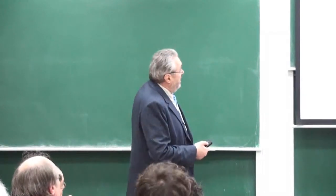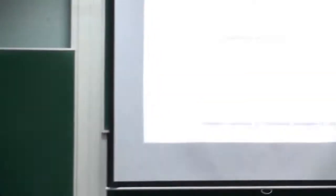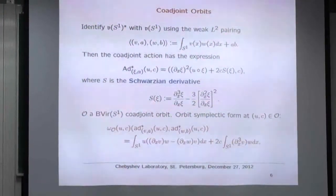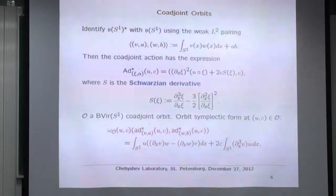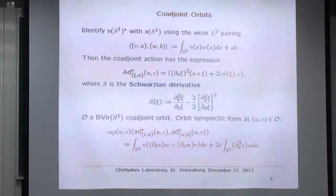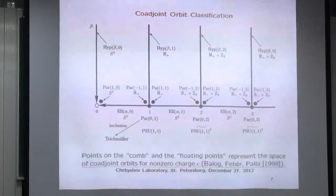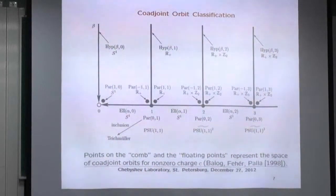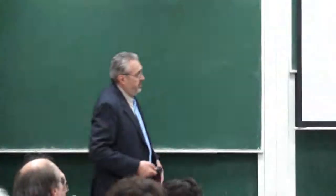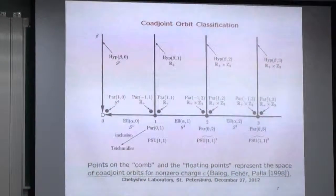Camassa-Holm is the Euler-Poincaré equation, or the spatial representation of the geodesic flow of the H¹ metric on Bott-Virasoro. Now there are coadjoint orbits. Here is the pairing, the coadjoint action of the group on the algebra, and here is the first indication that serious complex analysis is coming — the Schwarzian derivative appears, and there is a constant Kirillov symplectic structure on each coadjoint orbit.